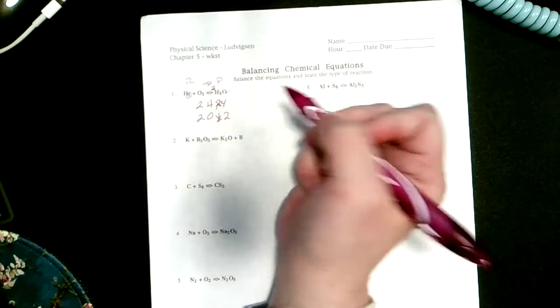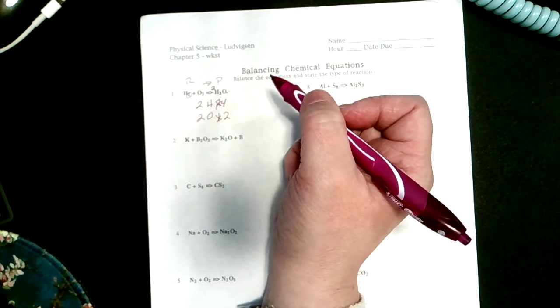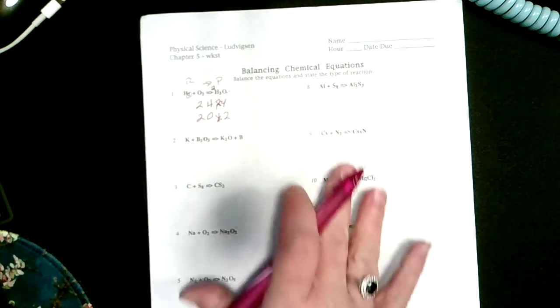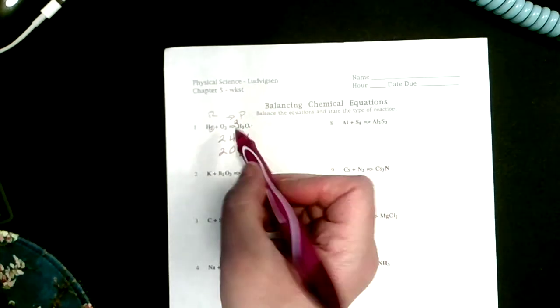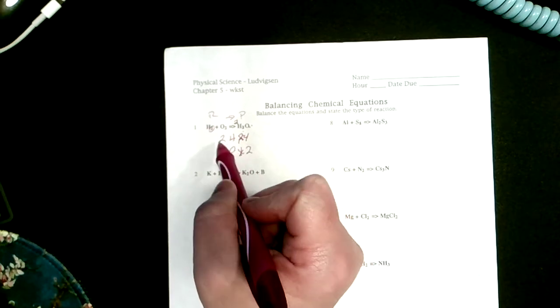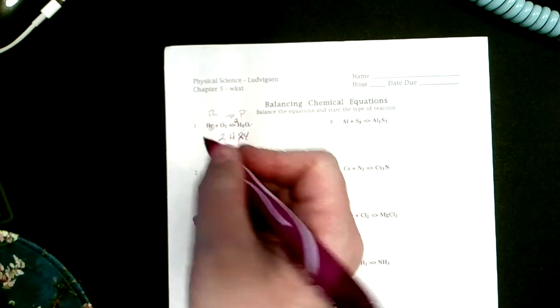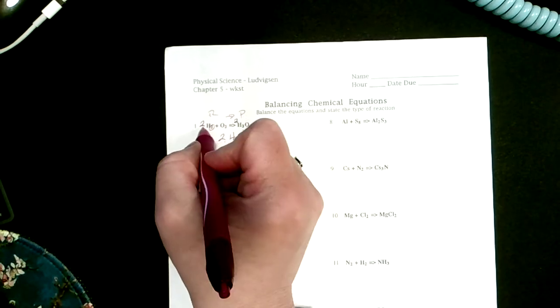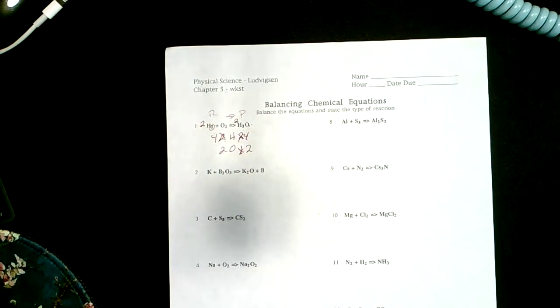But my hydrogens are not balanced, so I need to go through here and say what times two is four. I need a coefficient of two. So two times two is four, and I now have a balanced equation. Let's take a look at the next one.